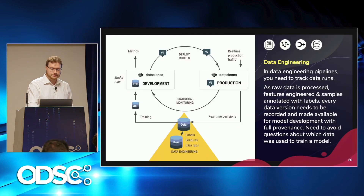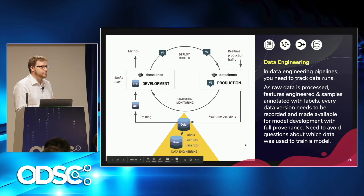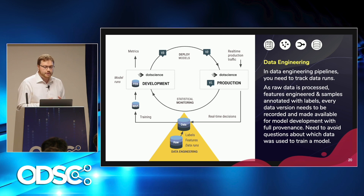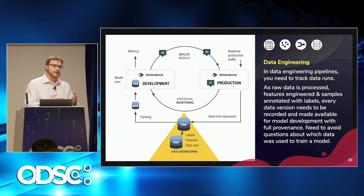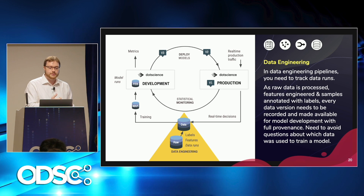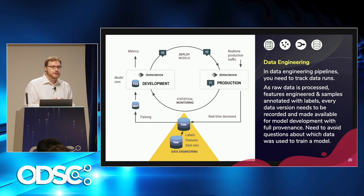I'm quickly going to run through the model lifecycle and talk about how this run tracking can apply. In the data engineering stage, you're labeling your data, doing feature engineering, and transforming raw data into training data. In this context, you need to be keeping track of these data runs: this version of this input data was run against this version of the code in this environment and created this version of this output data. That way you have a provenance record of where things came from. If stakeholders later contest decisions made by a model, or you need to debug why a model is misbehaving nine months down the line, you've got a record of exactly what went into creating the data and where it came from. This is also essential if you want to isolate bias in your training data — you can't do that if you don't know exactly what training data was used.